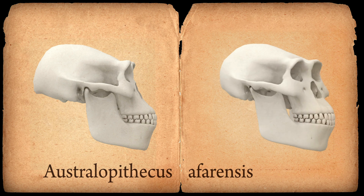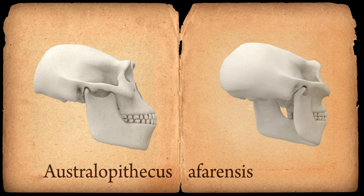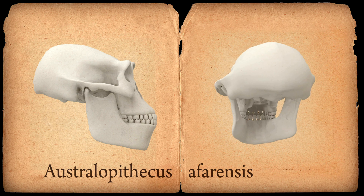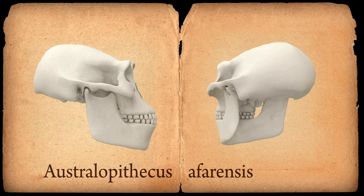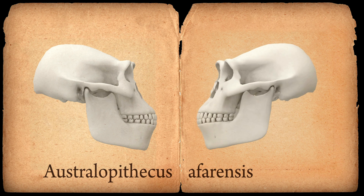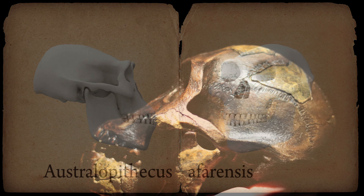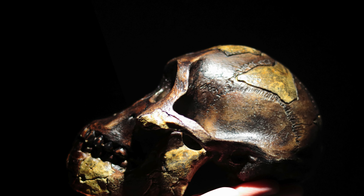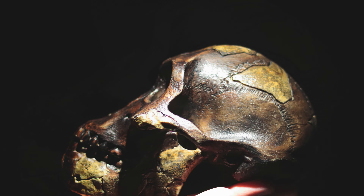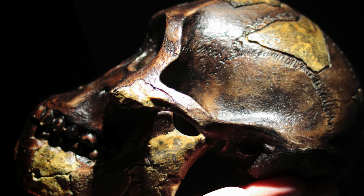Despite these differences, they shared some features with later hominins like us. Common features included a short upper jaw, a reduced midface, and supraorbital structures integrated with the brain case. They also had shorter skulls, less sexual dimorphism in canine teeth, and smaller incisors.